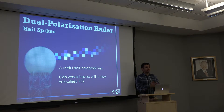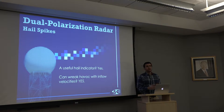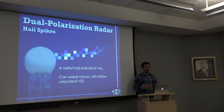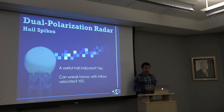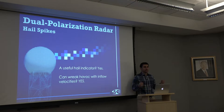Our next presentation continues with the theme of contamination from scattering that isn't exactly what we want to see or where we're looking. Hail spikes are also known as three-body scatter spikes. Is it a useful hail indicator? Yes — it tells us that we have lots of hail present.